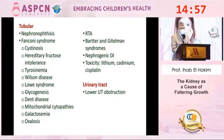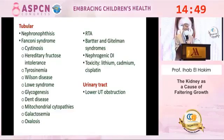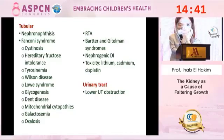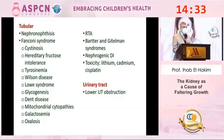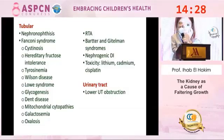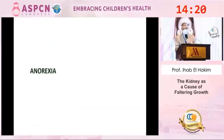Tubular disorders causing polyuria include nephronophthisis, Fanconi syndrome and its causes — cystinosis, fructose intolerance, tyrosinemia, Wilson disease, glycogenosis, Dent disease, mitochondrial disorders, galactosemia, and oxalosis — as well as renal tubular acidosis, Bartter and Gitelman syndrome, nephrogenic diabetes insipidus, and drug or substance toxicity. Urinary tract causes include lower urinary tract obstruction with secondary tubular dysfunction. All these conditions with severe polyuria result in polydipsia with excess water intake and deficient nutrition.